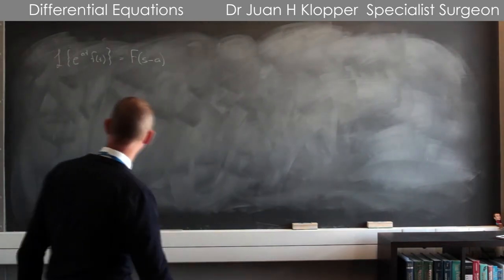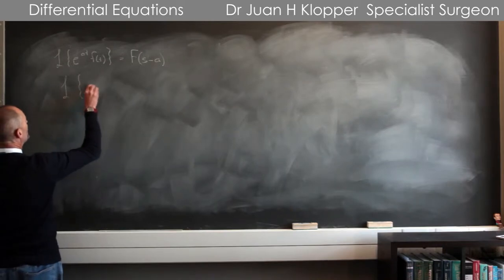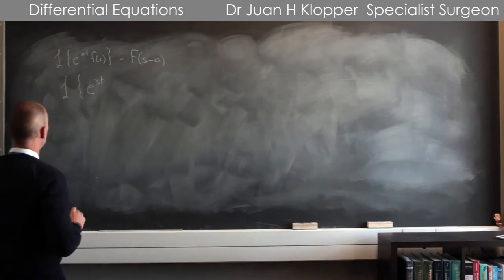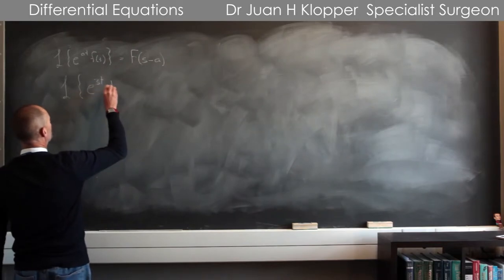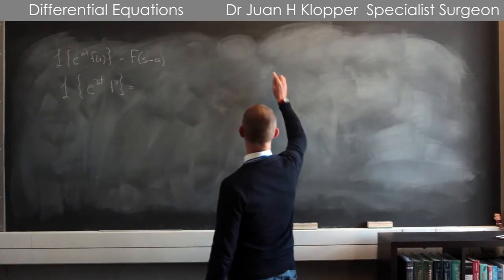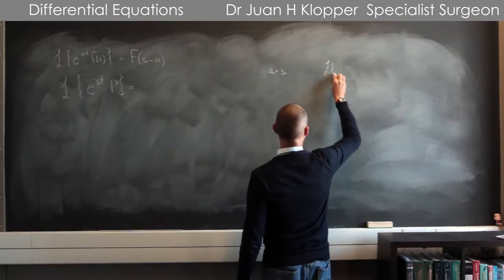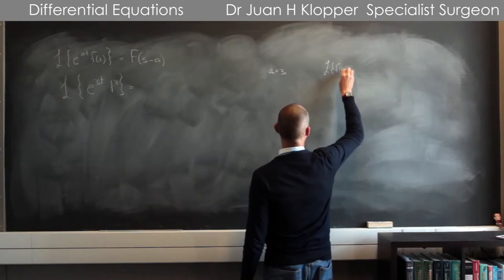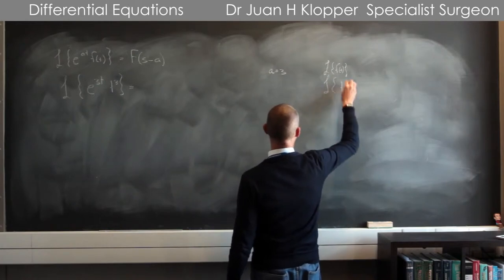So if I were to ask the Laplace transform of e to the power 3t times, for instance, t to the power 3, t cubed, what would that be? Well, first of all, I note that a equals 3 here, and I know what the Laplace transform is of the f(t), here, which is the Laplace transform of t to the power 3.